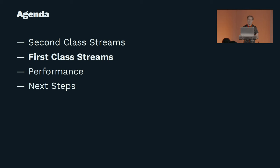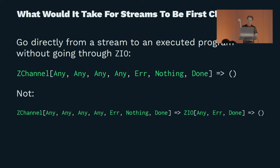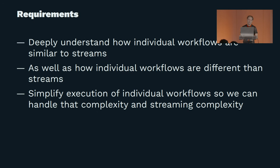So we've explored the world of second-class streams. What would it look like for streams to be first class? Essentially it means we would need to go directly from a stream program to an executed application, instead of going from a stream program to a ZEO and then to an executed application.